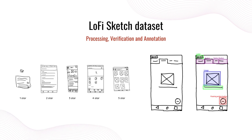The sketches in the dataset were manually verified and annotated to provide a large-scale annotated dataset for training DNN models. We identified and annotated 41,560 constituent UI elements classified into 21 UI element categories in this dataset.